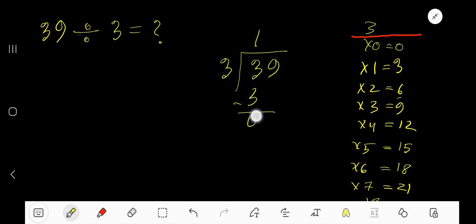Bring down the next digit. 09 means 9. 3 goes into 9 how many times? 3 goes into 9 three times. 3 times 3 is 9, subtract to get 0.